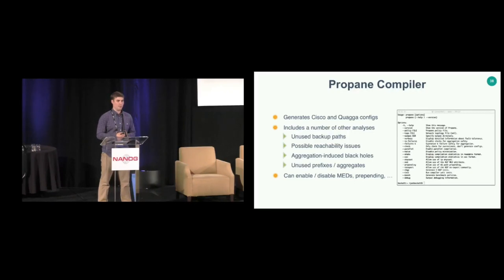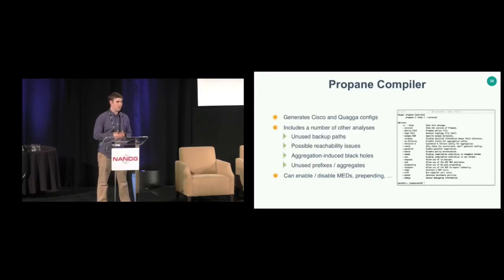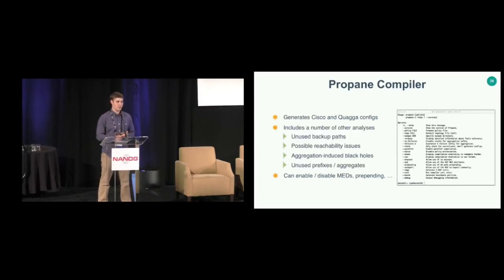The Propane compiler includes several other analyses: detecting unused backup paths where a policy prefers one path over another but the second path can never actually be used; flagging potential reachability issues; finding aggregation-induced black holes; detecting unused prefixes and unused aggregates. You can also configure the compiler to use or not use various BGP attributes like MEDs or prepending.